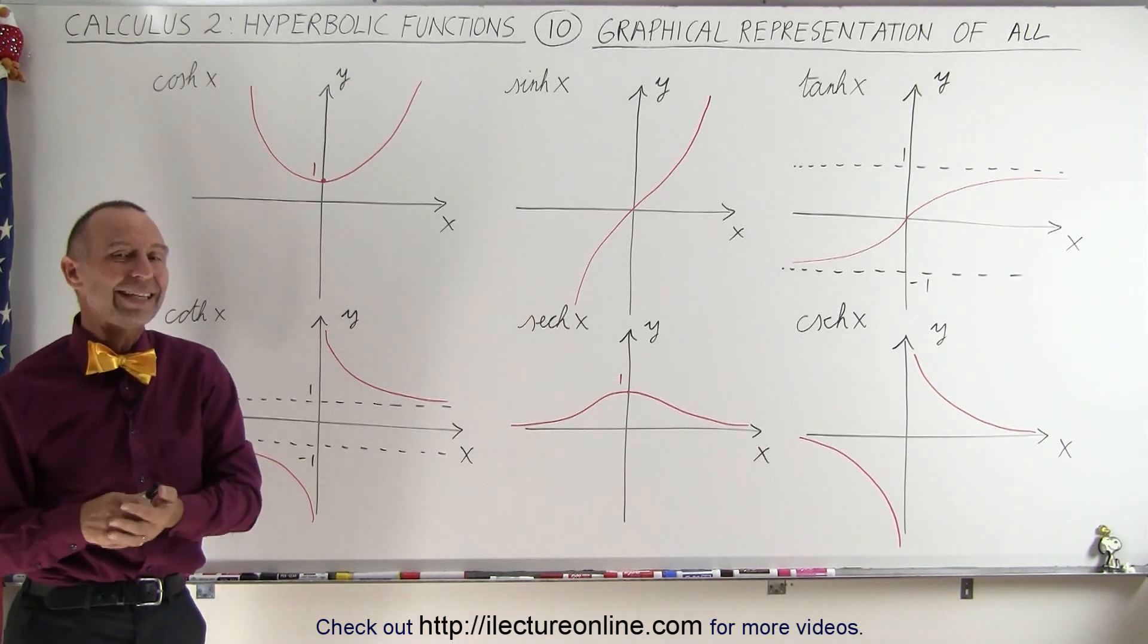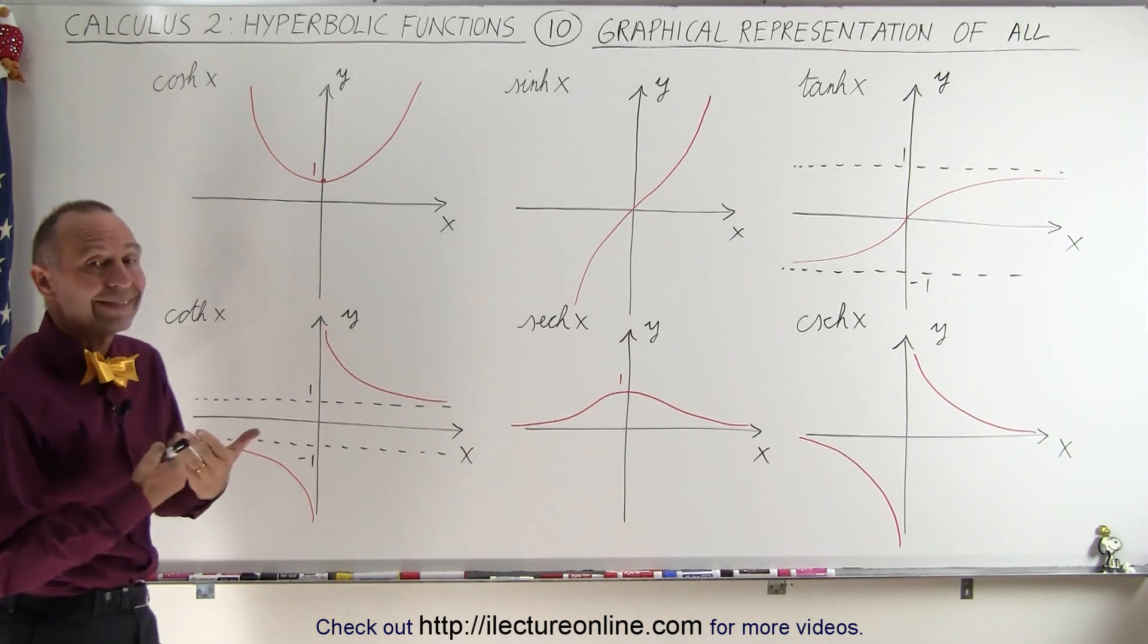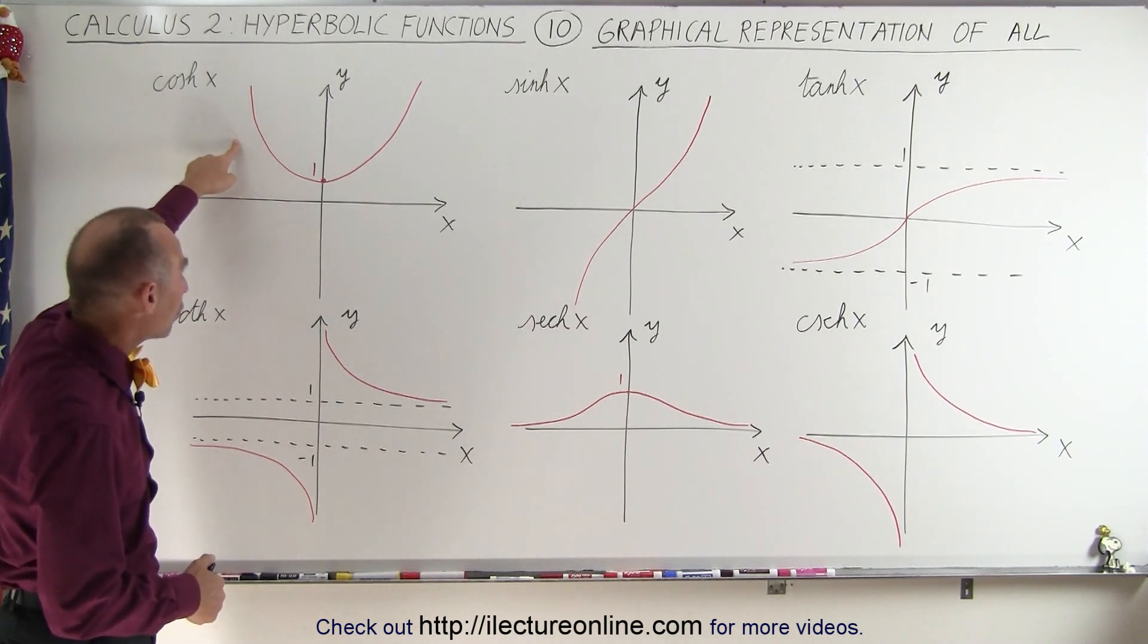But what about the hyperbolic secant and the hyperbolic cosecant? Well, since the hyperbolic secant is the inverse of the hyperbolic cosine,